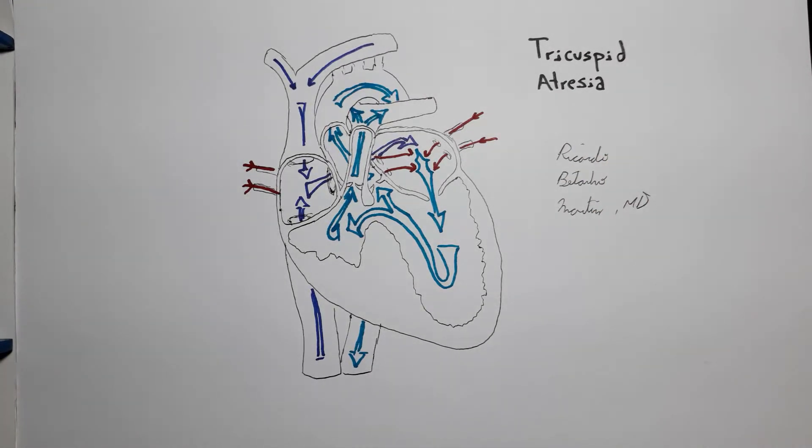So, we have three key points here. First, there is no connection between the right atrium and the right ventricle, so blood has to go around. Second, since blood has to pass through the left ventricle, both in systemic and pulmonary circulation, the presence of an atrial septal defect, or a large patent foramen ovale and a ventricular septal defect, both is paramount. Without both septal defects, there is no way for the condition to be viable postnatally.